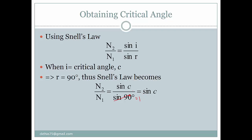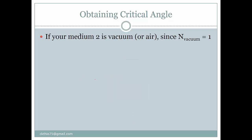Since sine 90 equals 1, the formula simplifies to sine c. So n2 over n1 equals sine c, and if you want to find c, you rearrange to get sine c equals n2 over n1. If you know medium 1 and medium 2 values, you can find the critical angle. However, if medium 2 is vacuum or air, since its refractive index is 1, you can further simplify this formula.